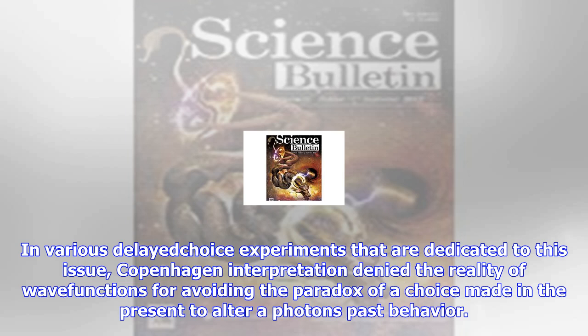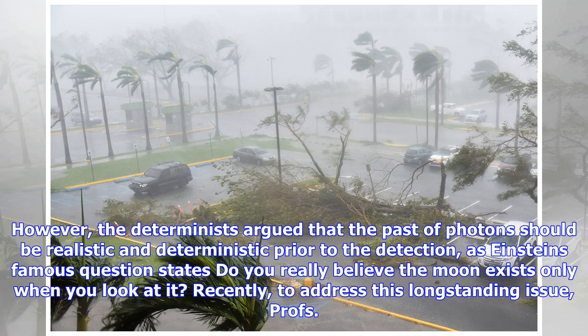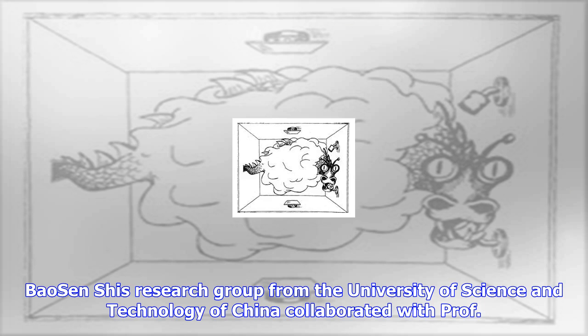Recently, to address this longstanding issue, Prof. Bao and Shi's research group from the University of Science and Technology of China collaborated with Prof. Zhai Hanzhou from Harbin University of Science and Technology and other collaborators to propose and demonstrate a quantum twisted double-slit experiment, in which photonics' orbital angular momentum (OAM) and its group velocity slowing down feature are employed to extract photons' propagation history after detections.